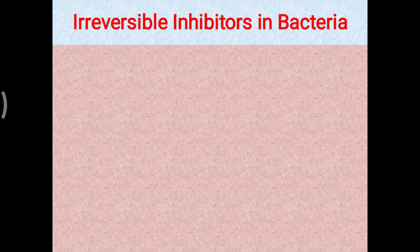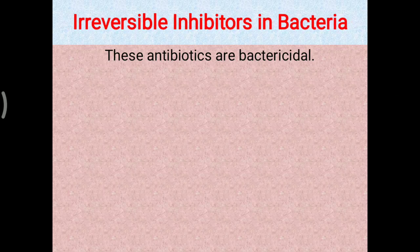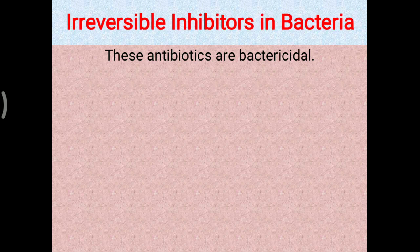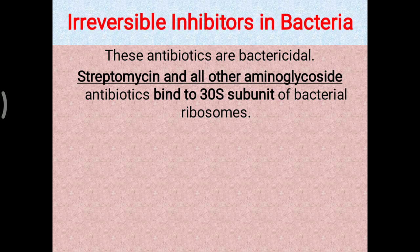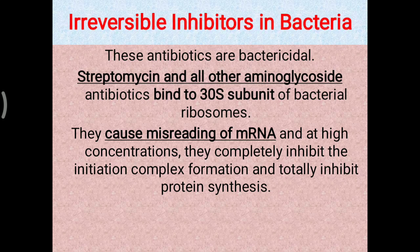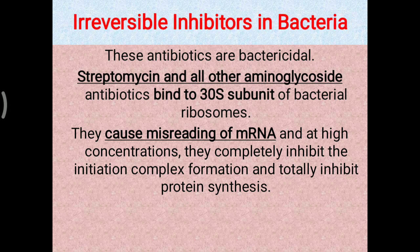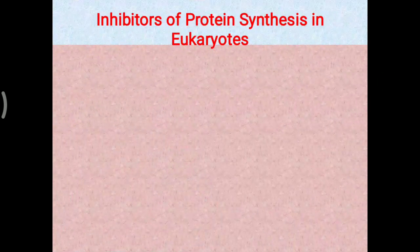Another type of antibiotic is based on irreversible inhibitors of translation in bacteria. These antibiotics are permanently attached — irreversible inhibitors — so they work as bactericidal agents and are able to kill the bacteria. Streptomycin and all other aminoglycoside antibiotics bind permanently to the 30S subunit of the bacterial ribosome, causing misreading of mRNA, and at high concentration they completely inhibit initiation complex formation, totally stopping protein synthesis so the bacterium dies.